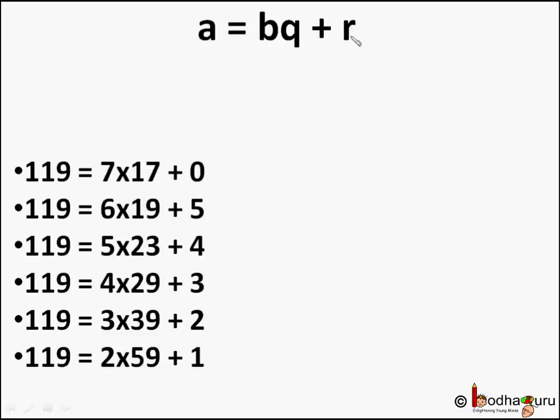what we get is: a equals bq plus r, where the remainder r is greater than or equal to 0 and less than the divisor b.